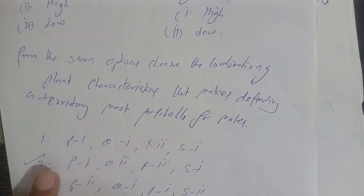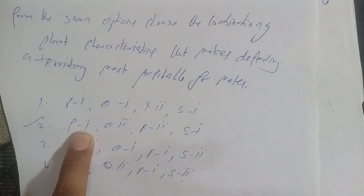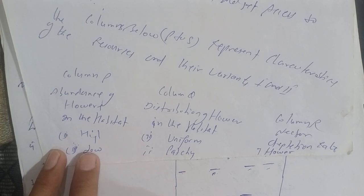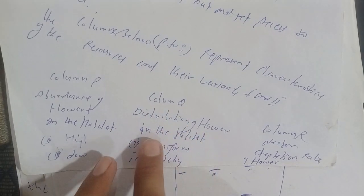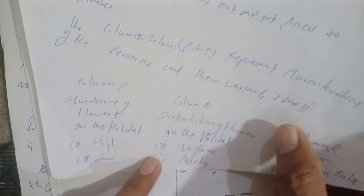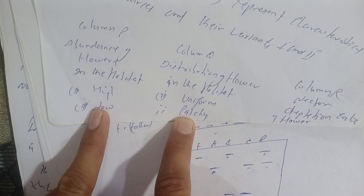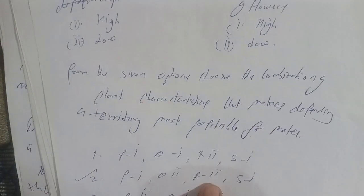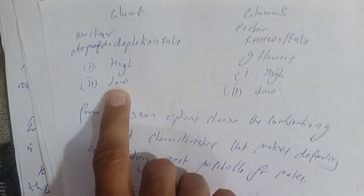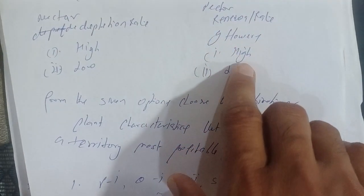Looking at the options: the first option involves high abundance of flowers in the habitat. The second option involves the distribution of flowers in the habitat being uniform. The third characteristic is the Nectar Depletion Rate of the flower — whether it is high or low. The Nectar Depletion Rate is listed as High, High, High for the relevant options.